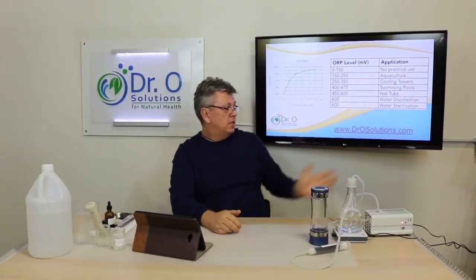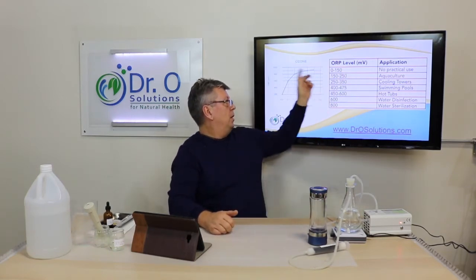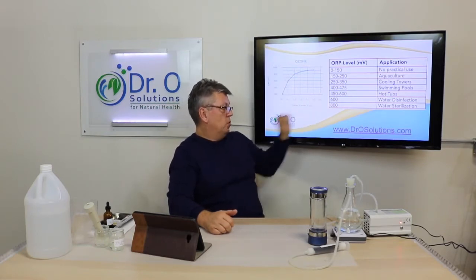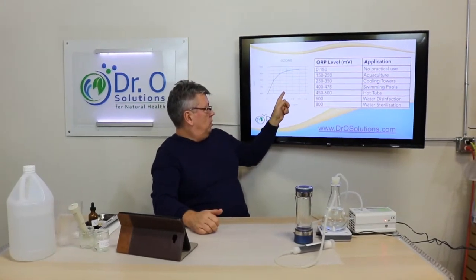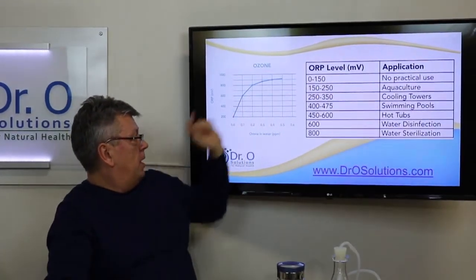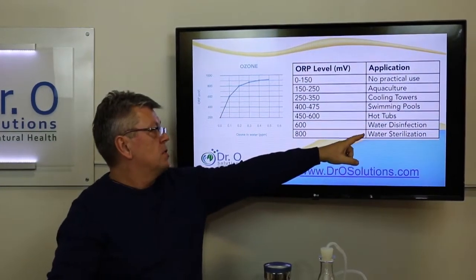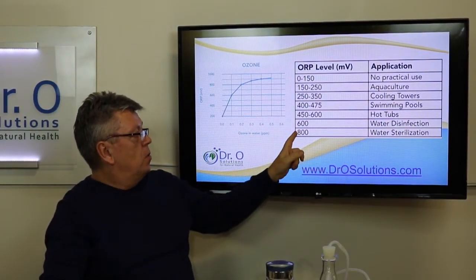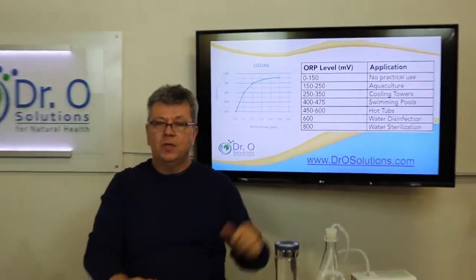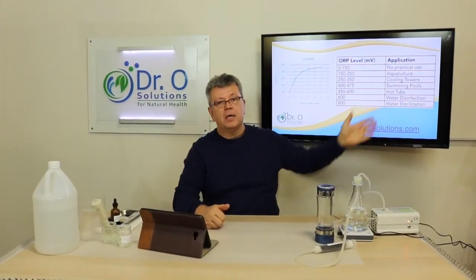Here is an example application of ozone. Ozone has a very high oxidative reaction to all substances. Here is ORP referenced to PPM ozone in water. When we get to 0.3 ppm, we cross 900 ORP. Disinfection starts at 600 ORP, and when we get to 800, that's sterilization. That's how ozone applies to processes used in commercial applications.